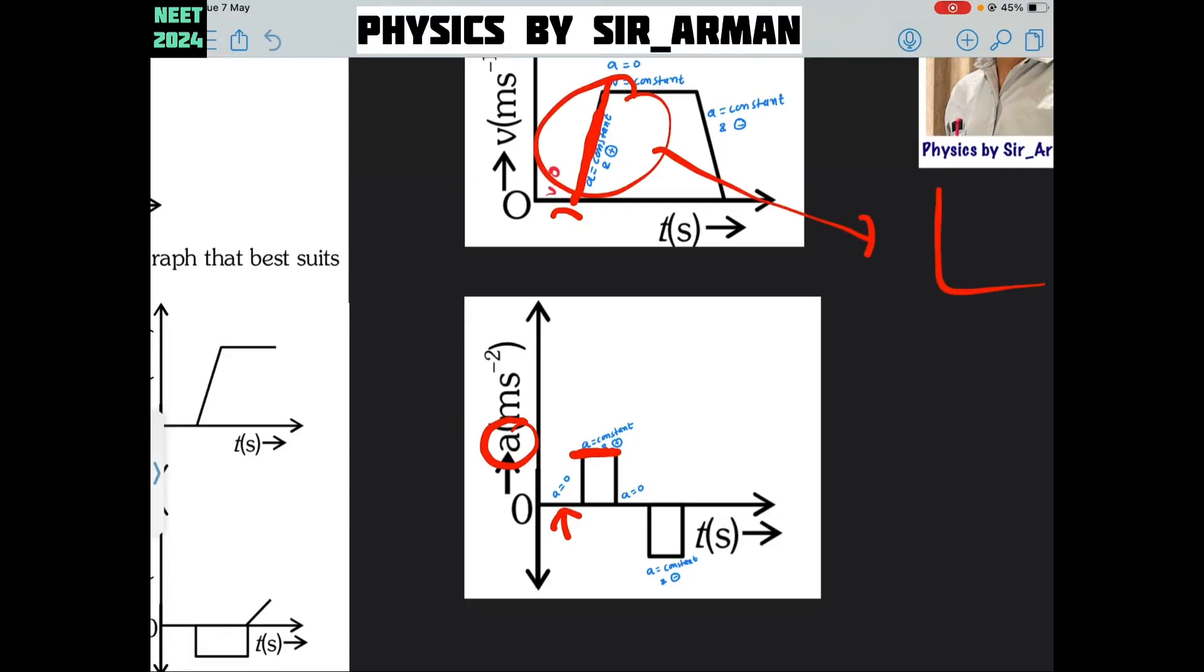Same line for A versus T graph can be visualized like this because acceleration is constant. Now, in the other part velocity is constant in the above graph, so acceleration is 0. This part represents acceleration is 0.